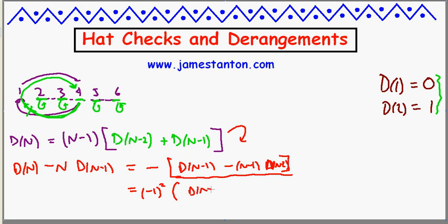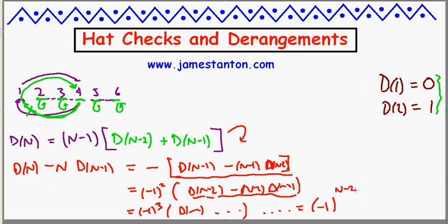So I get another minus one. And then I'm down d of n minus two, minus n minus two, d of n minus three. But that is the same with a minus introduced of one level down again, all the way down to minus one, and you'll check the algebra, n minus two of d of two minus two, d of one. But what is d of two minus two minus one? Well, d of two is one, d of one is zero, that's one.